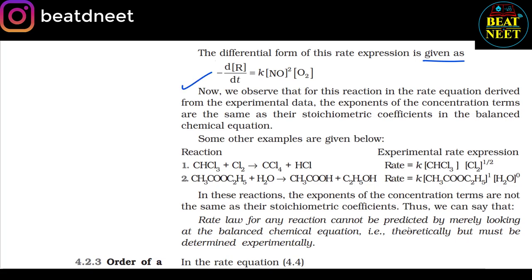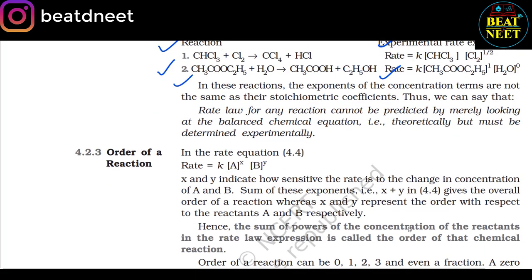Hence the rate equation for this reaction is: rate = k[NO]²[O₂]. For this reaction, the exponents in the rate equation are the same as their stoichiometric coefficients in the balanced equation. Some other examples: CHCl₃ + Cl₂ → CCl₄ + HCl, and CH₃COOC₂H₅ + H₂O → CH₃COOH + C₂H₅OH — in these reactions the exponents are not the same as their stoichiometric coefficients. Thus, the rate law for any reaction cannot be predicted by merely looking at the balanced chemical equation but must be determined experimentally. 4.2.3 Order of a Reaction.